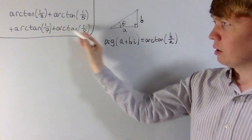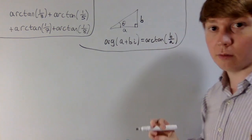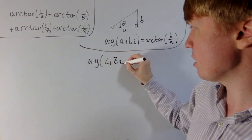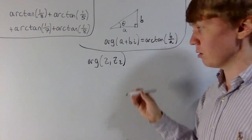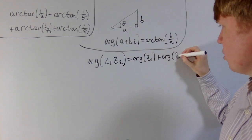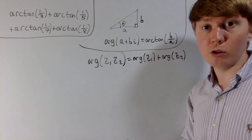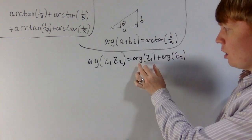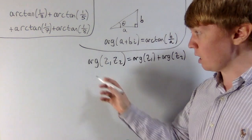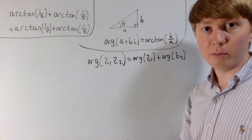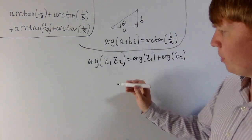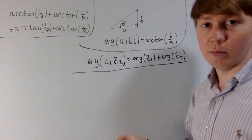How is this actually going to help us calculate the sum? Well, if you multiply two complex numbers z1 and z2 together, the argument of that product is equal to the argument of z1 plus the argument of z2. This is true up to multiples of 2π, so we need to be a little careful when applying this rule. If the sum of arguments becomes bigger than π, we may need to subtract 2π, since the convention is to keep the argument between positive π and negative π.